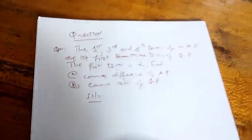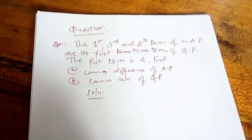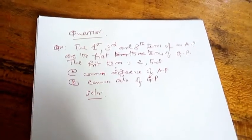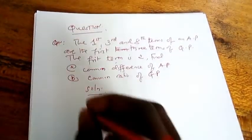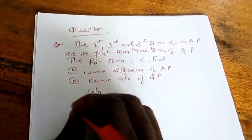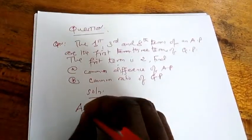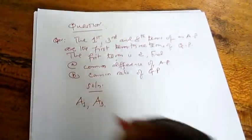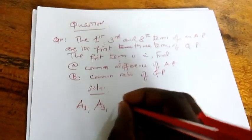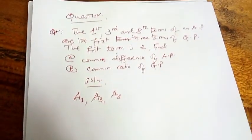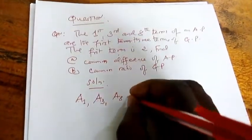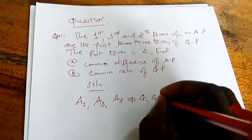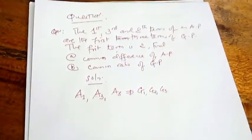He told us to find the difference between those terms in arithmetic progression and the common ratio in those first, third, and eighth terms that form the first three terms in GP. For the first step, you start as follows: you write solution. After writing solution, we've been given an arithmetic progression.